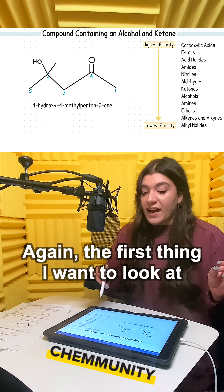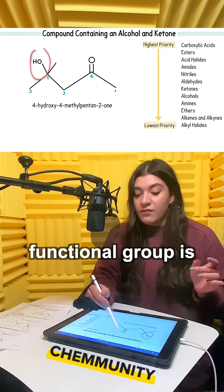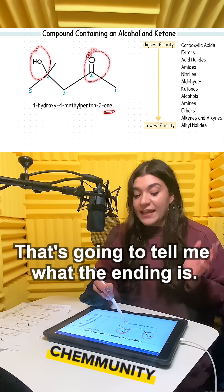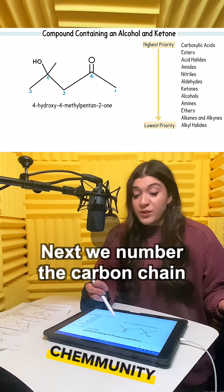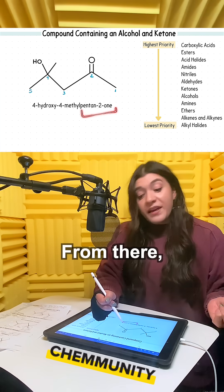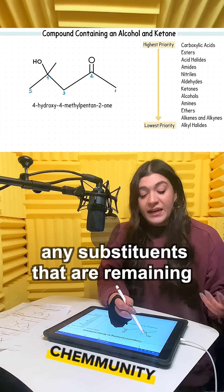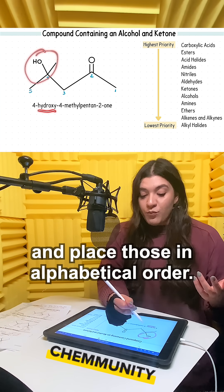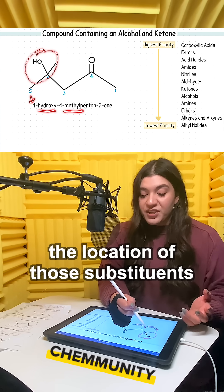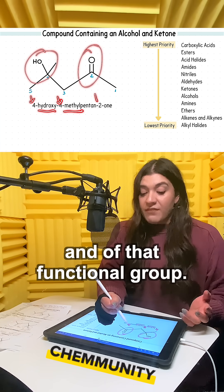The first thing you want to look at is just seeing which of these functional groups is going to have a higher priority — that's going to tell you what the ending is. Next, number the carbon chain, making sure that the highest priority group has the lowest number. From there, look at any substituents that are remaining and place those in alphabetical order. Always state the location of those substituents and of that functional group.